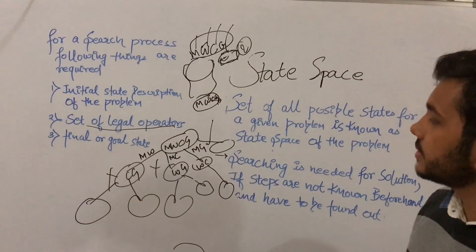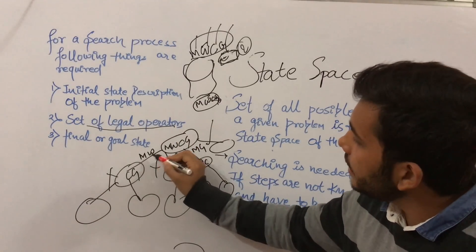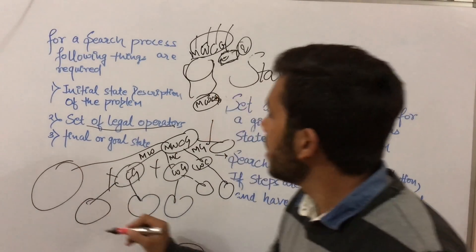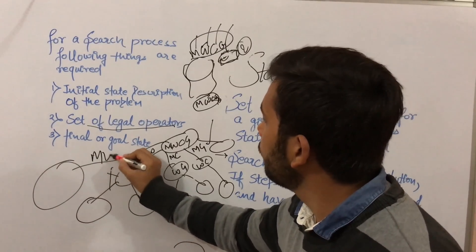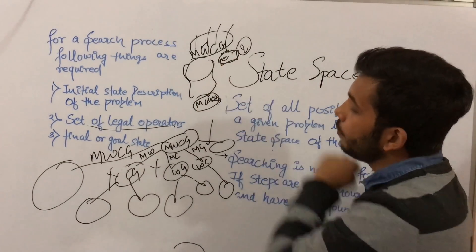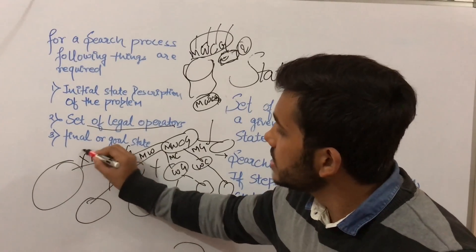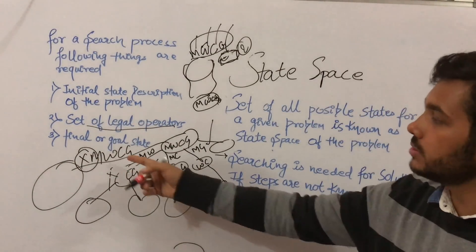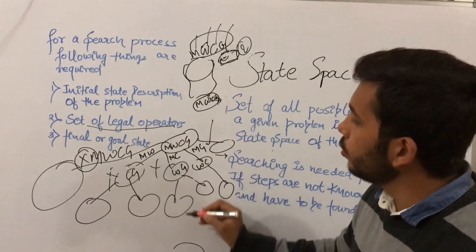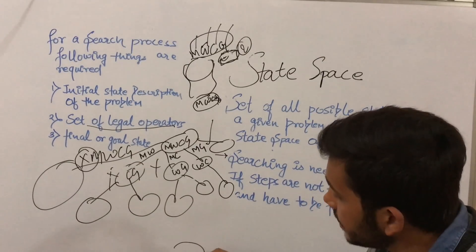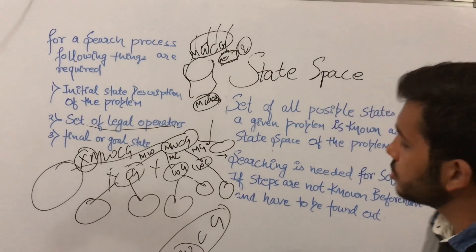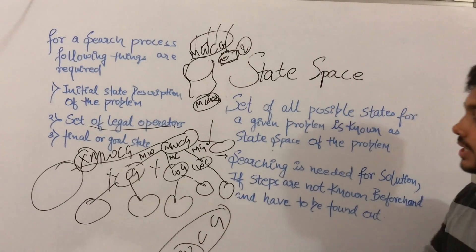Second, the set of legal operators — for example, man and wolf are allowed. But if you make a state where you move all four — man, wolf, cabbage, goat — that is not allowed because you can only move two at a time. So only legal operators are permitted. Third, the final or goal state. You have to reach the final or goal state where there is man, wolf, cabbage, and goat on the other side. When you reach this condition, it is the final or goal state.